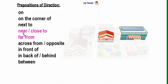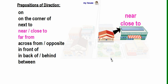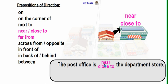The next two we have are 'near or close to' and also 'far from.' These are opposites. When we say 'near or close to,' we indicate something that is very close. For example, the post office is near the department store, or the post office is close to the department store.